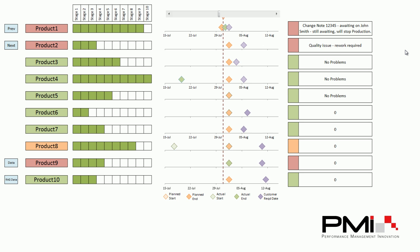Hi, this is Jed Shields of PMI Limited. I'm going to take you through a visual management tool that I developed a little while ago. It's a method of showing a number of different products, how far they've been completed against different stages, and looking at a timeline to see when the planned start was and when it was planned to end and when it actually started and ended.